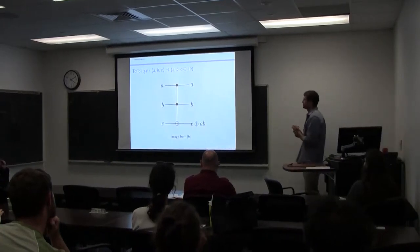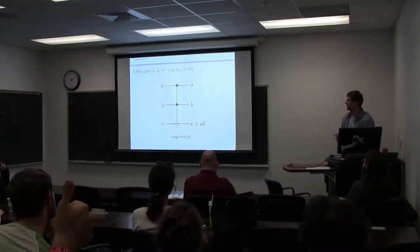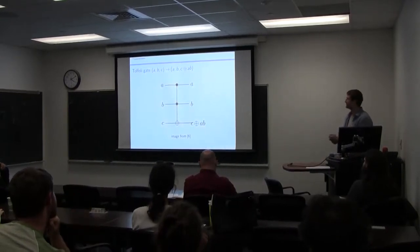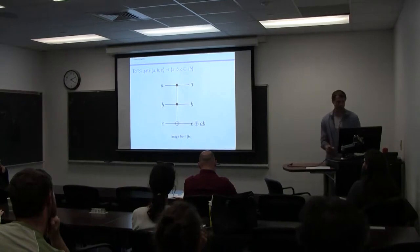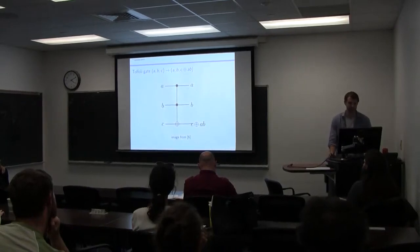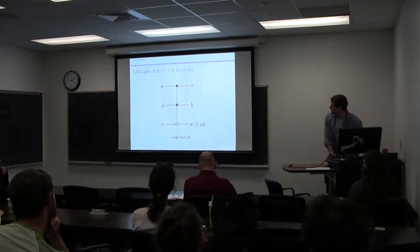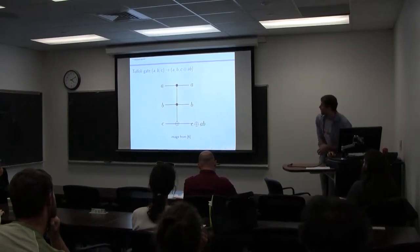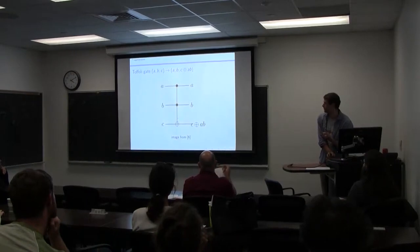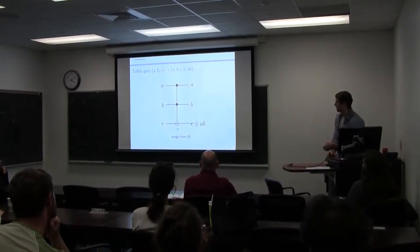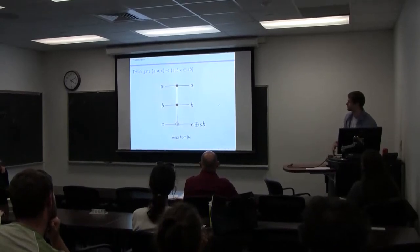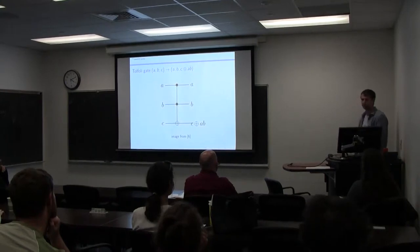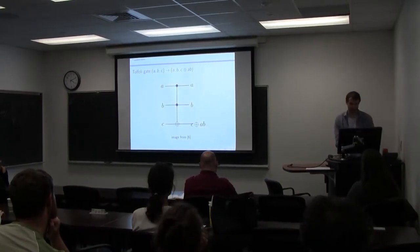Now, the Toffoli gate. We're given as input states A, B, and C, and we're looking at a conditional NOT gate here. A conditional NOT gate — we're really just focusing on: are these two bits A and B both one? If so, we're going to apply the NOT gate to C. What's lovely about the Toffoli gate is that it is reversible, so we can use it as a possible quantum gate.